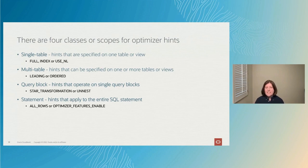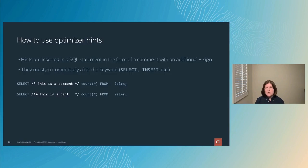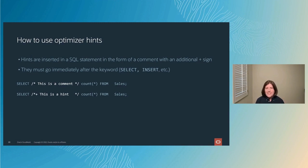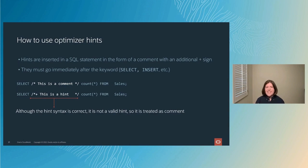Now let's talk about how to implement hints. When you add a hint to a SQL statement, it needs to be inserted immediately after the SQL keyword — after SELECT, INSERT, or UPDATE — and it's inserted in the form of a comment. But it's a very special comment: we add an additional plus sign at the leading edge of that comment to alert the optimizer that the contents are important, that it is actually a hint. The second example on the slide shows the correct syntax; the first is just a plain comment.